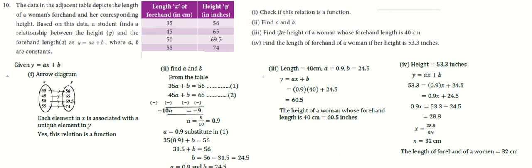Find a and b. Find the height of a woman whose forehand length is 40 centimeters. Find the length of forehand of a woman if her height is 53.3 inches.